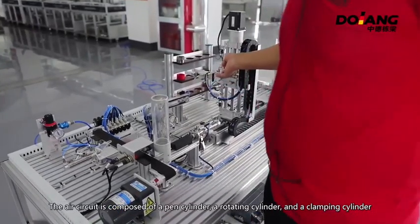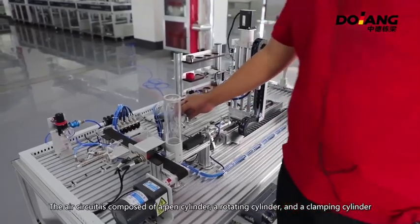The air circuit is composed of a pan cylinder, a rotating cylinder, and a clamping cylinder.